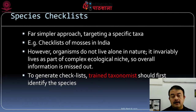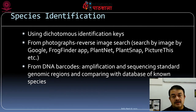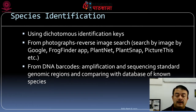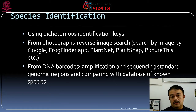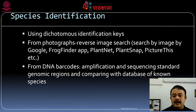To generate a checklist, trained taxonomists must first identify species. For species identification you can use dichotomous identification keys, which is the formal approach. Informal but increasingly popular approaches include reverse image search from photographs and taxon-identifying apps such as PlantNet, PlantSnap, and PictureThis for plants, and FrogFinder and butterfly identification apps for zoology.